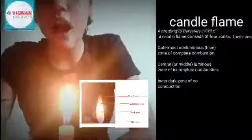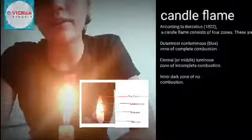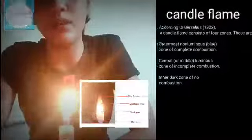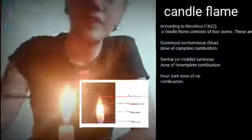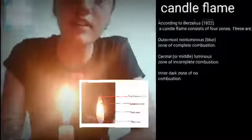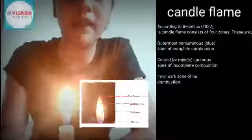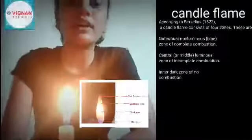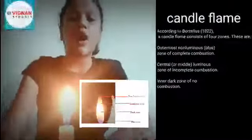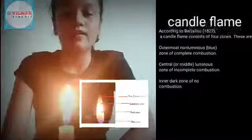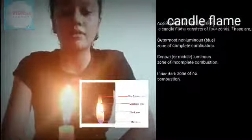This is the outermost layer of the candle which is in blue color. This is the innermost layer of the candle which is in black color. It is called wax vapor, which is unburned.